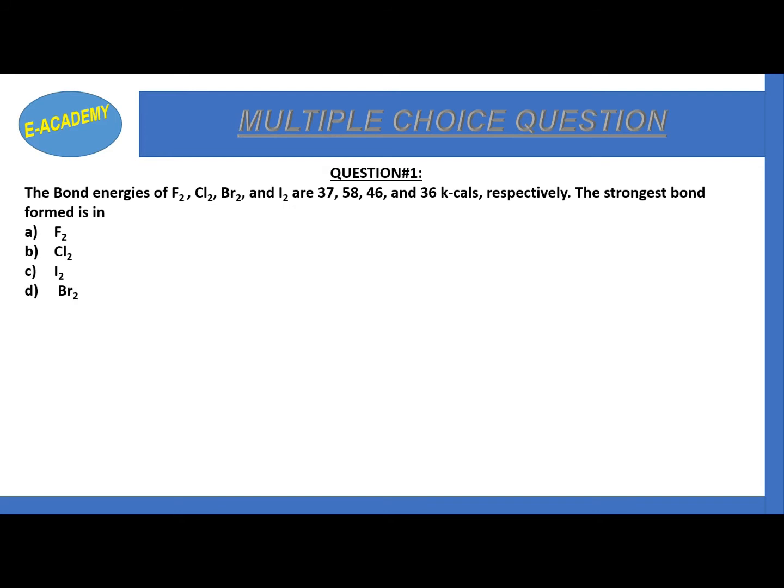Cl2, I2, and Br2. Now the energies are: fluorine is 37, chlorine is 58, bromine is 46, iodine is 36.